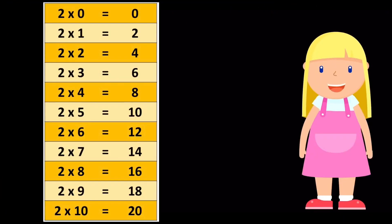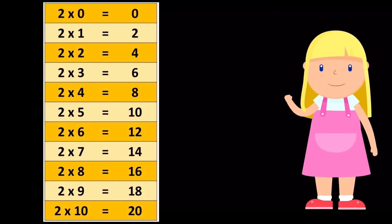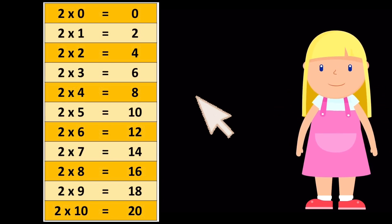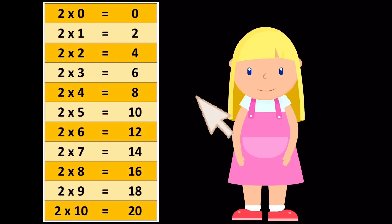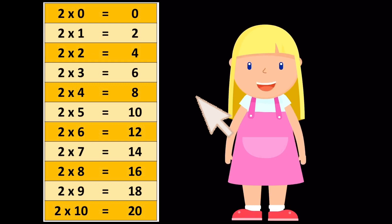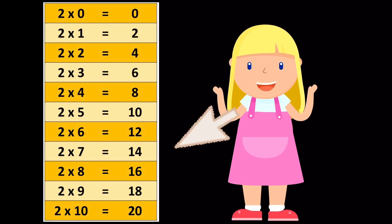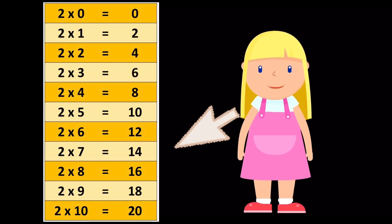Now my turn. Let's repeat with me. Two ones are two. Two twos are four. Two threes are six. Two fours are eight. Two fives are ten. Two sixes are twelve. Two sevens are fourteen. Two eights are sixteen. Two nines are eighteen.